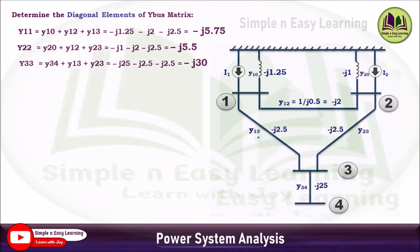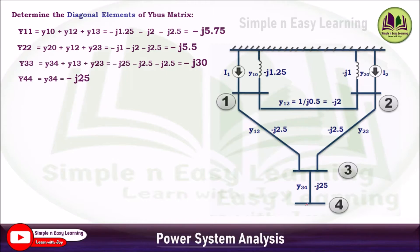For bus three, Y13, Y23, and Y34 are the three lines connected to bus 3. Adding all three gives Y33 = -j30. For bus four, only one line is connected — Y34 — so Y44 = -j25. This is how the diagonal elements are calculated.